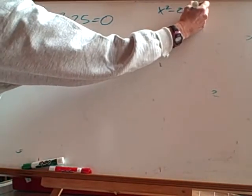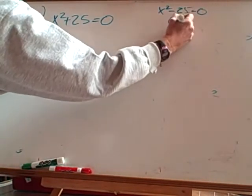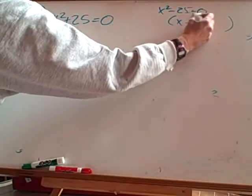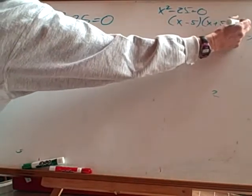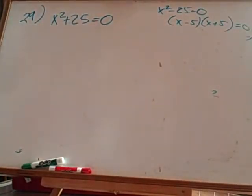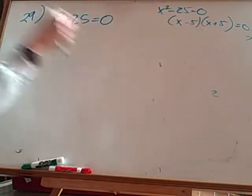minus 25 equals zero? That's a difference of two squares. It's (x - 5) and (x + 5). Your zero product property tells you this, and you'd end up with